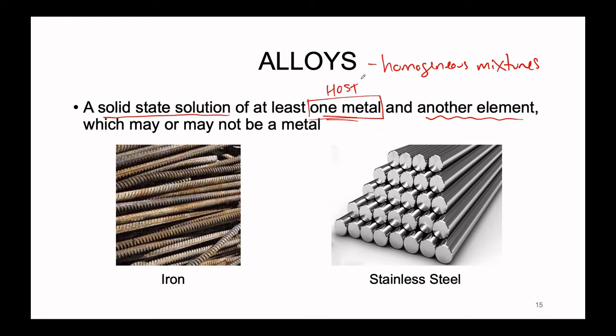Alloys also tend to have different or more reinforced properties as opposed to the pure substance host metals. A really good example of that is the difference between iron and stainless steel. Iron is a metal — it has all of those great conductive, malleable types of properties — but an additional chemical property it has is that it is prone to rusting. It's very easy for iron to become oxidized by the oxygen in the atmosphere, turning into rust, which is literally iron oxide.